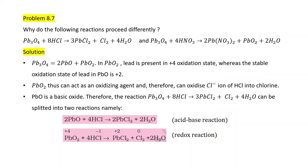Now let us see a question: why do the following reactions proceed differently? Pb₃O₄ + 8HCl → 3PbCl₂ + Cl₂ + 4H₂O, but Pb₃O₄ + HNO₃ → Pb(NO₃)₂ + PbO₂ + 2H₂O. In one case with HCl we get Cl₂; with HNO₃ we get PbO₂. How do we explain this?